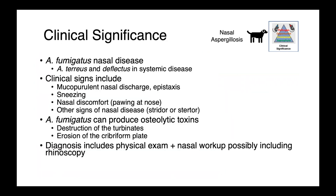Nasal aspergillosis is by far the most common and is associated with Aspergillus fumigatus. Aspergillus terreus and deflectus are more commonly found in systemic disease, although this is quite rare. We would need to have an animal who is fairly severely immunosuppressed in order to identify this.